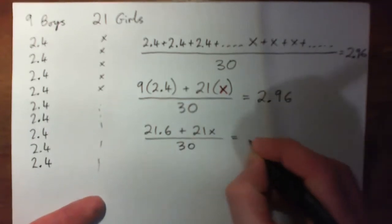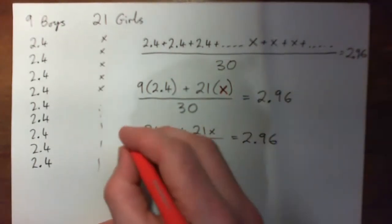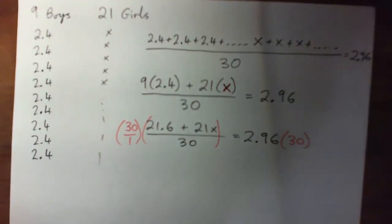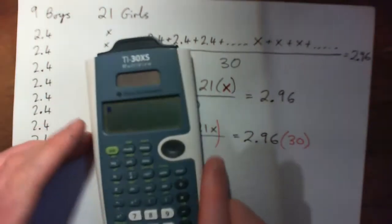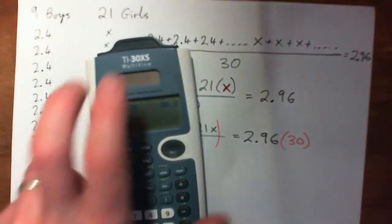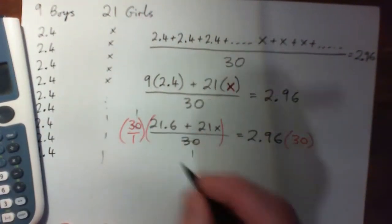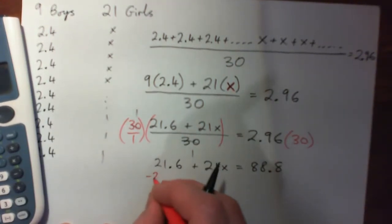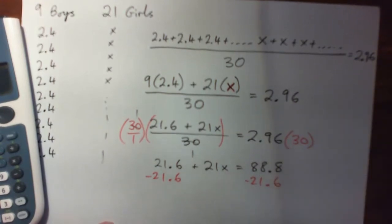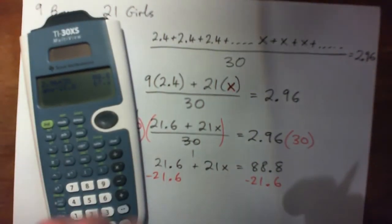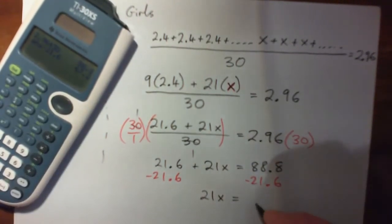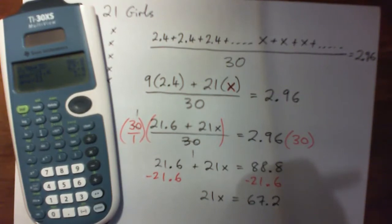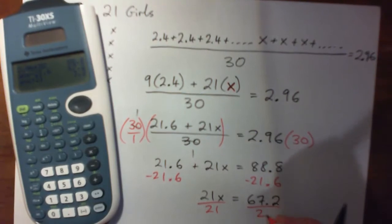So 21.6 plus 21X over 30 equals 2.96. Now I'm gonna multiply both sides by 30, and 2.96 times 30 is 88.8, so these 30s cross cancel. Now I got 21.6 plus 21X equals 88.8, and now I'm gonna subtract 21.6 from both sides. So I got 21X equals 67.2.